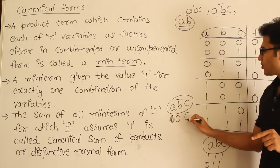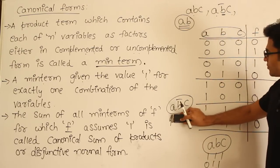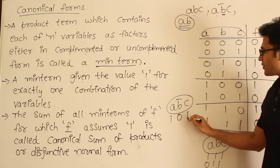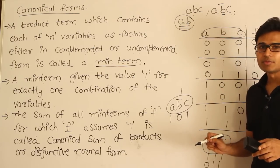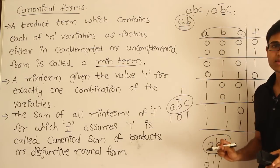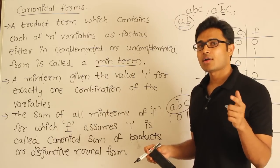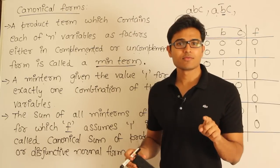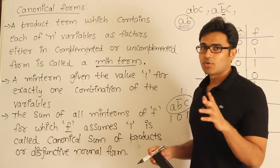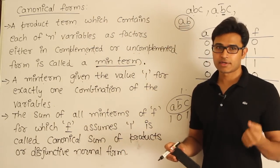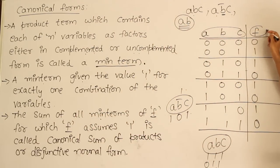A·B'·C will give output 1 only when the input is 1,0,1. For any other combination of inputs it will not generate output 1. So remember: a minterm must contain all variables in complemented or uncomplemented form, and a minterm will always generate a value of 1 for only one combination and 0 for all other combinations.